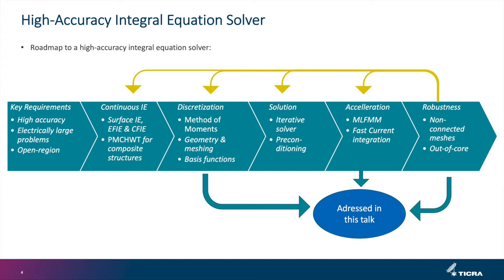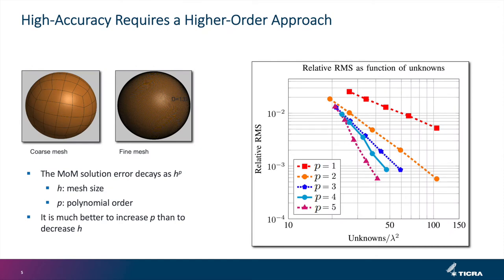The key issue to arrive at a high accuracy integral equation solver is to use a high order approach. A typical integral equation solver uses linear basis functions — to reach an error level of 10^-3 you need a lot of basis functions. Whereas with a fifth order approach you only need a modest number of basis functions to reach the same error level. It is much better to increase the polynomial order P than to decrease the mesh size H.